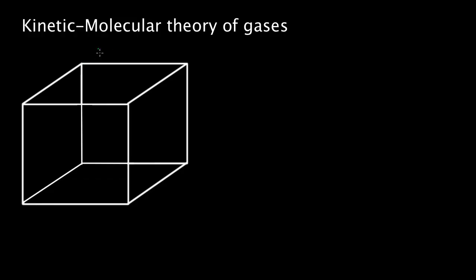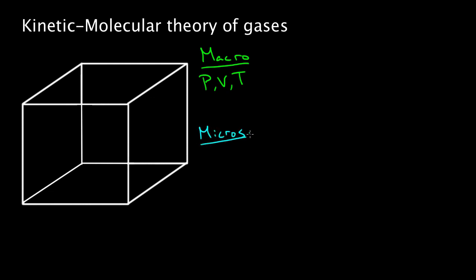I want to talk about the kinetic molecular theory of gases. What this basically says is that the macroscopic properties of a gas — like the pressure, volume, or temperature — are just a result of the microscopic properties of the gas molecules, like the position and the speeds of these molecules. V down here is speed, V up here is volume. The idea is this gas is made of molecules flying around in certain directions with certain speeds, and if you knew those speeds and the distribution of speeds and positions, you could figure out these macroscopic properties.